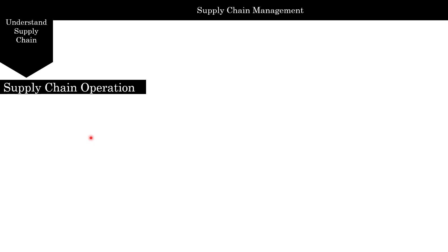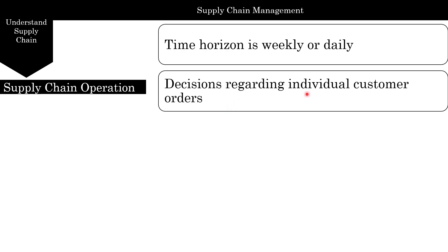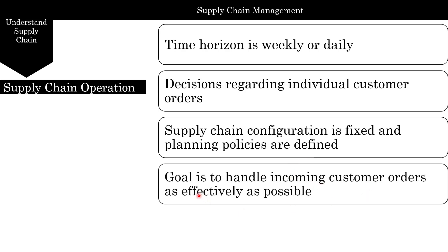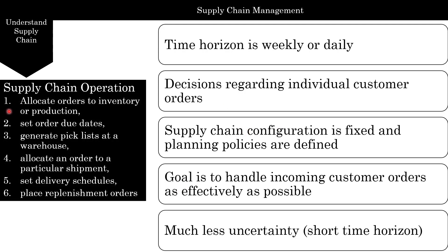Finally, we come to the operational plan. We started at strategic, moved to tactical, and now we're at operational, where the time horizon is weekly or daily and decisions are very microscopic — down to individual customer orders. Supply chain configuration is fixed and planning policies are well defined. The goal is to handle incoming customer orders as effectively as possible, with much less uncertainty due to the short time horizon. Supply chain operations include: allocating orders to inventory or production, setting order due dates, generating pick lists at warehouses, allocating orders to shipments, setting delivery schedules, and placing replenishment orders.